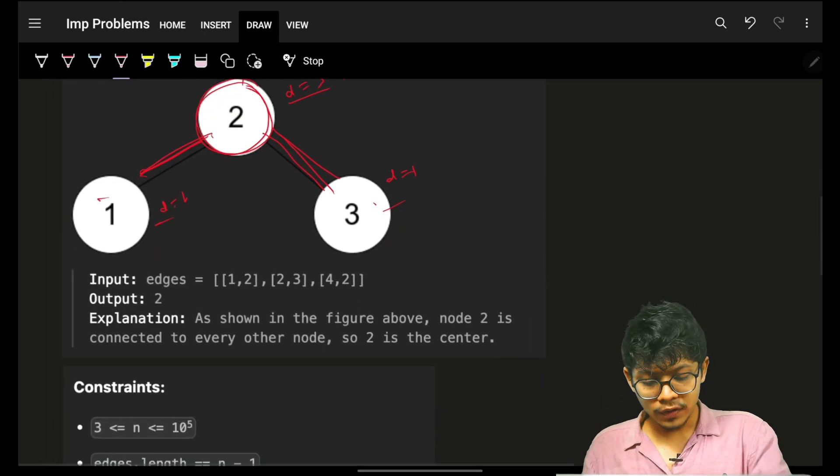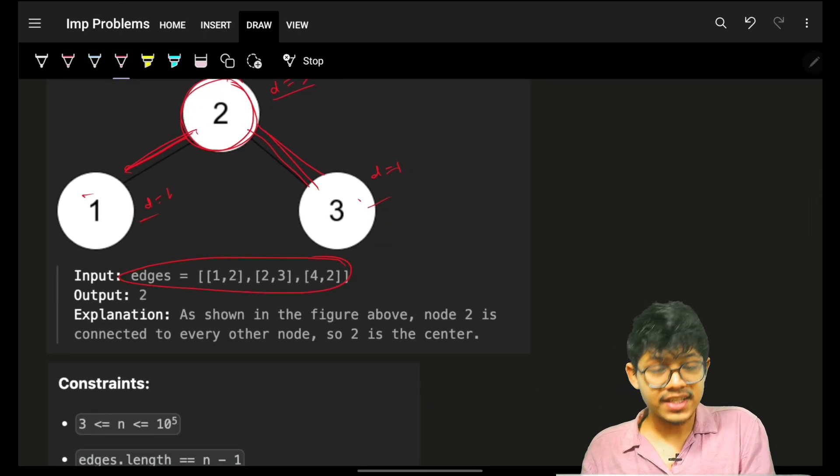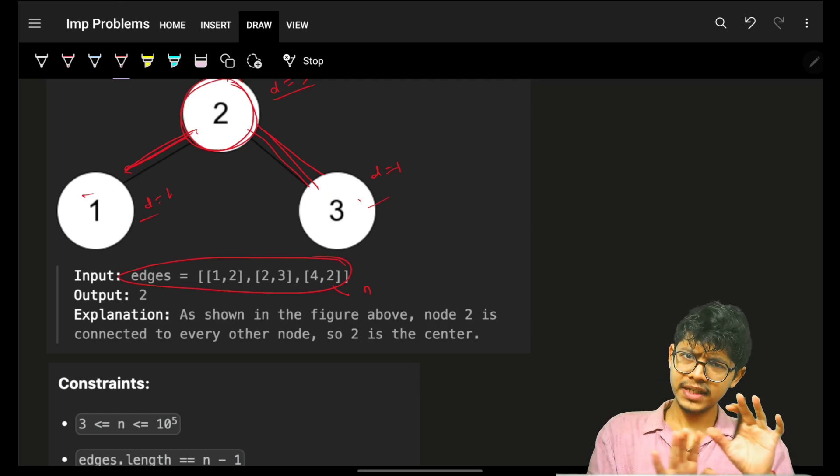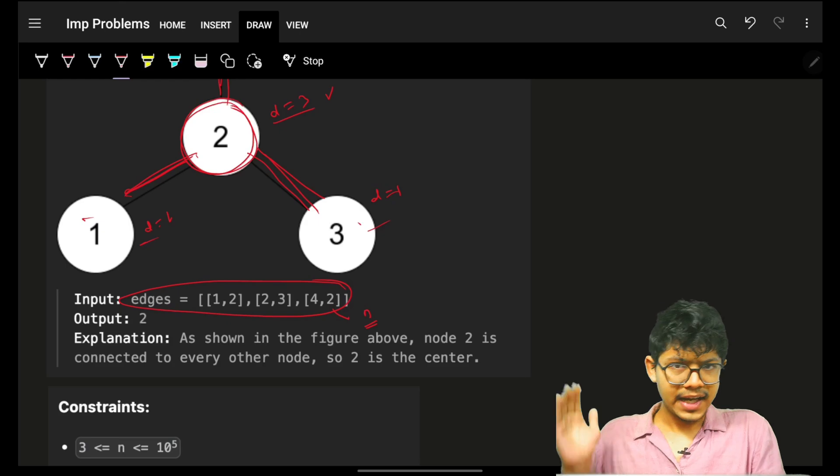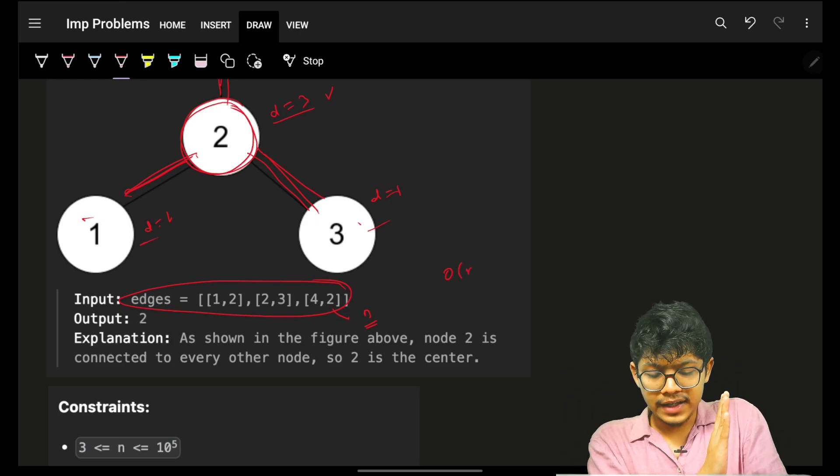So what you will do: you will have to iterate on the entire edges array. Let's take the array size as n. It will take O(n) time, and for sure I have to maintain a degree for all of my nodes.